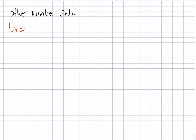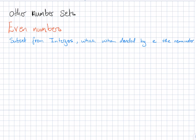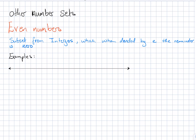Other number sets not included in our previous sets are the even numbers. The even numbers are actually a subset from the set of integers which, when divided by 2, the remainder is 0. Examples include negative 6, negative 4, negative 2, 0. It's important to know that 0 is an even number.